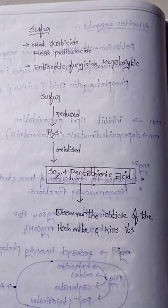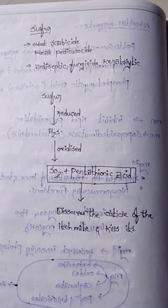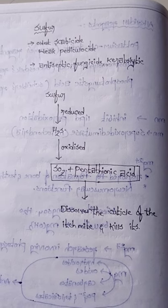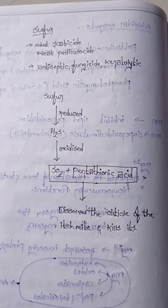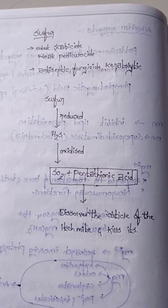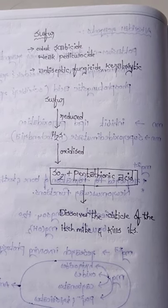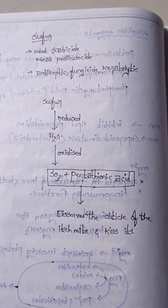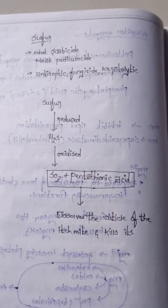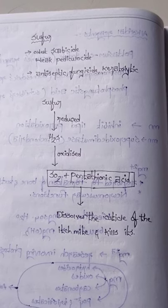Today our topic is about sulfur, its medicinal uses and mechanism of action. Sulfur is the oldest scabicide and weak pediculocide agent, antiseptic, fungicide, and keratolytic agent. These are the medicinal uses of sulfur.